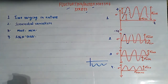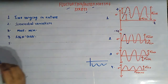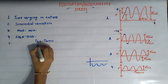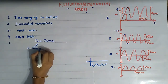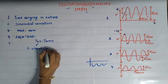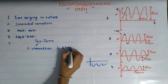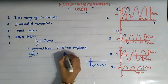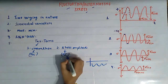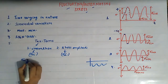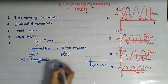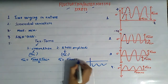Now let us look at two important terms related to fluctuating stresses. Number one is mean stress, denoted by sigma_m, and number two is stress amplitude, denoted by sigma_a. Mean stress is defined as sigma_max plus sigma_min divided by two, and stress amplitude is defined as sigma_max minus sigma_min divided by two. Keep in mind that sigma_max and sigma_min must be substituted with their correct signs according to the sign convention.